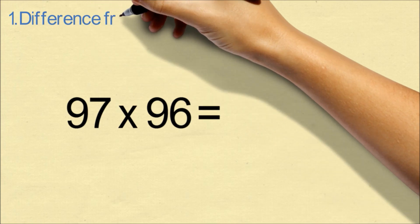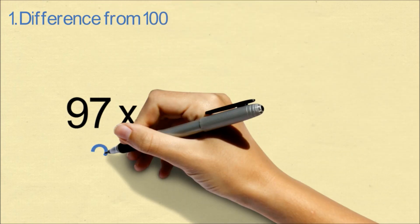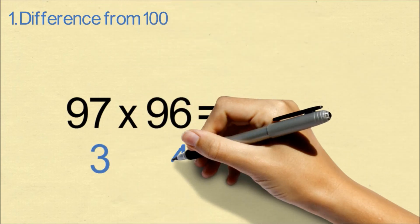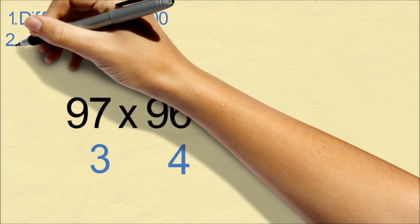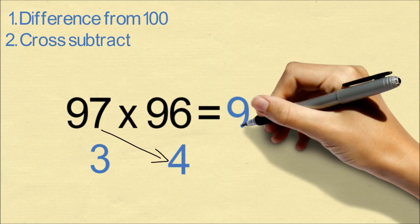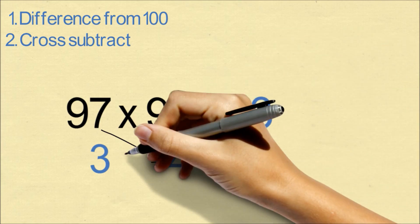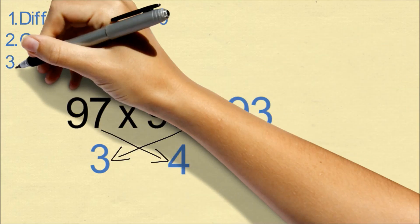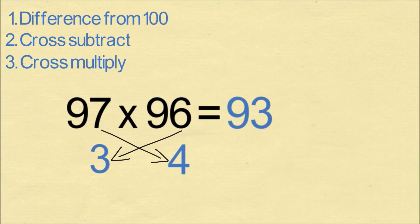There are three steps to the process. The first step is to write down the difference from 100. 97 is 3 less than 100 and 96 is 4 less. The second step is to cross subtract. 97 minus 4 is 93. You'll notice that if you cross subtract the other way, it's the same answer. The final step is to cross multiply.